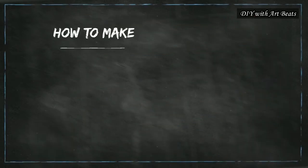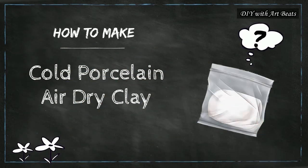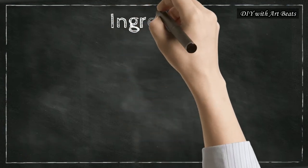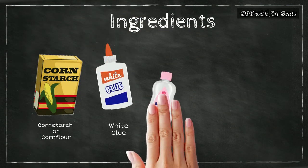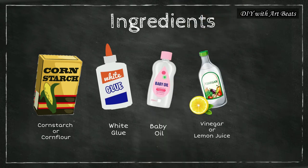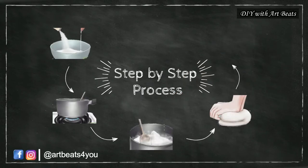Today we will see how you can make cold porcelain air dry clay with ingredients that are mostly available at home. All you need is corn starch, white glue, baby oil, vinegar and some lotion, and follow this step by step process to make your own homemade cold porcelain clay.